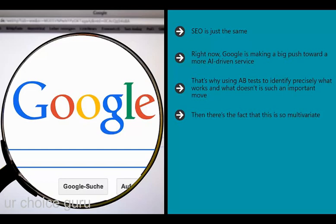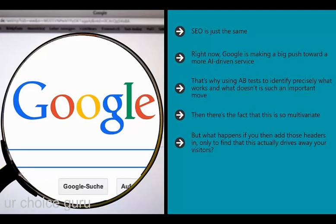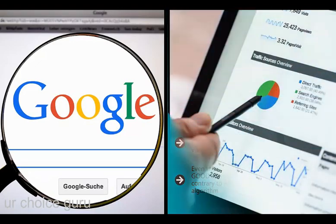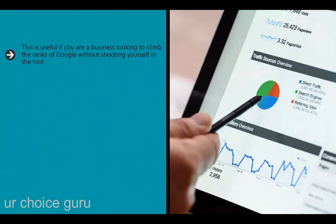SEO is also multivariate. It might be that Google would prefer you to use headers with keywords, but what happens if adding those headers drives away your visitors? That alone is useful information from a split test - but it's also possible that in driving away visitors you send negative signals to Google and end up hurting your ranking even though what you're doing is considered good from an SEO standpoint. When you take all of that into account it becomes less obvious what you should do, and this makes it all the more useful to just test it and see what actually works.